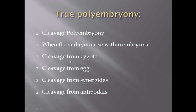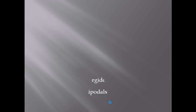To summarize cleavage polyembryony: it includes cleavage from zygote, cleavage from egg, cleavage from synergids, cleavage from antipodals — all cells present inside the embryo sac. Cleavage polyembryony also includes cleavage from suspensor and cleavage from endosperm.